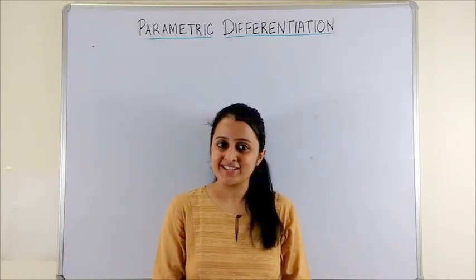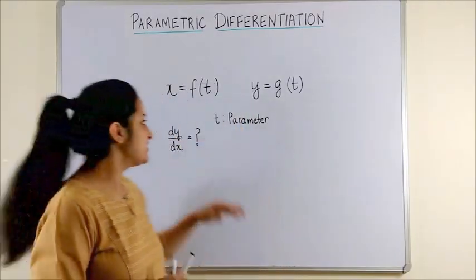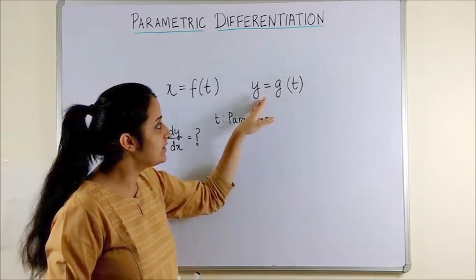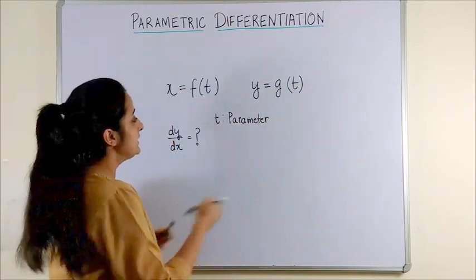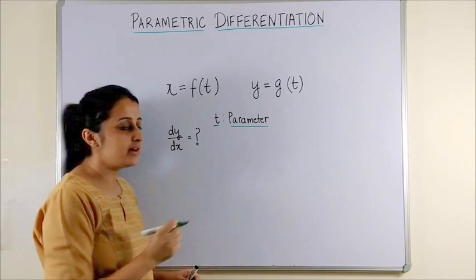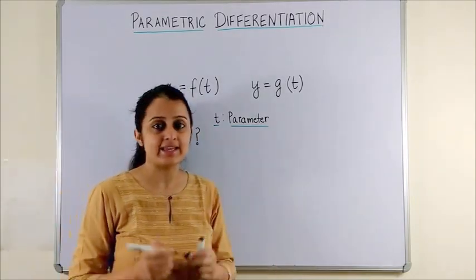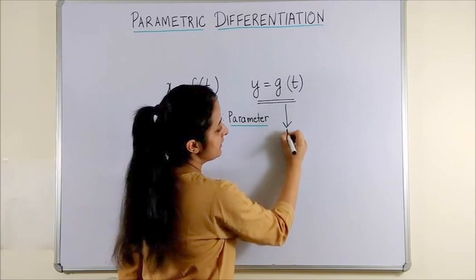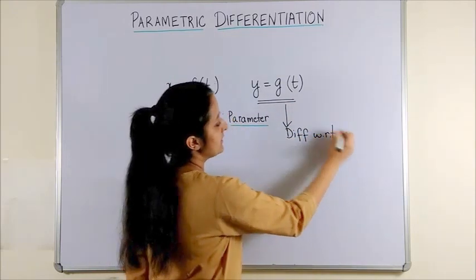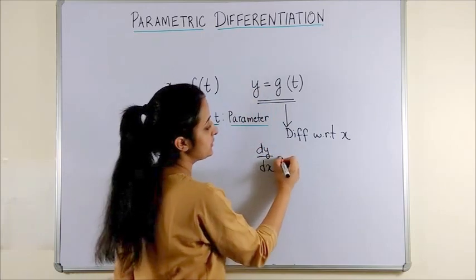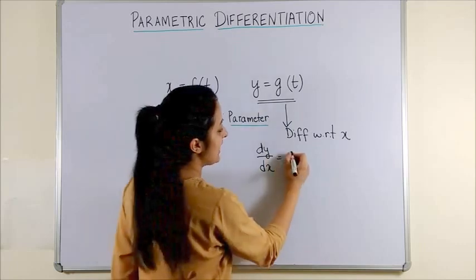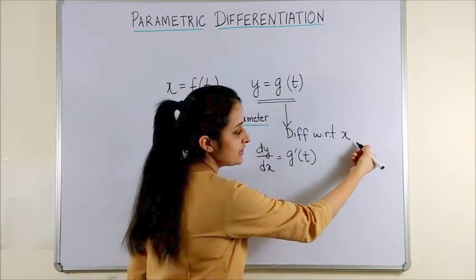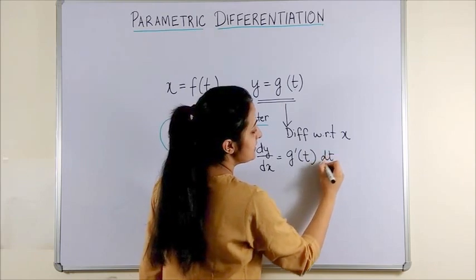Now let's dive straight into the topic for the day. For parametric differentiation, if you have a variable x which is a function of t, likewise you have another variable y which is a function of t once again, this t is known to be the parameter and the challenge is to find dy/dx in this case. Now let's recollect the chain rule to do the same. So if we begin with y and differentiate with respect to x, we get dy/dx equals g'(t), but since the parameter is t and we are differentiating with respect to x, that becomes dt/dx.